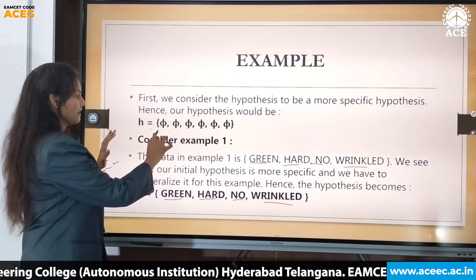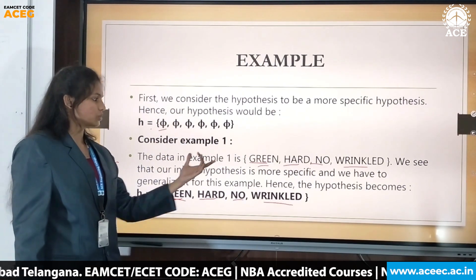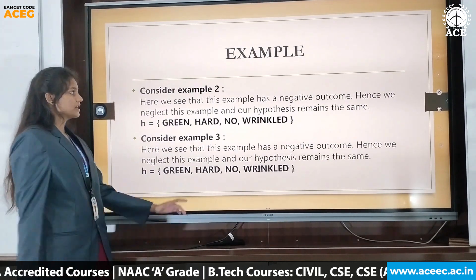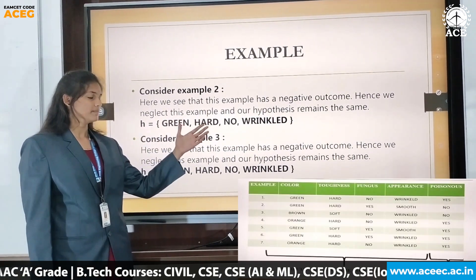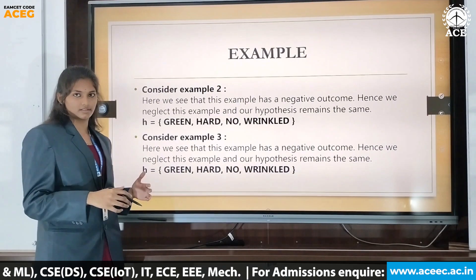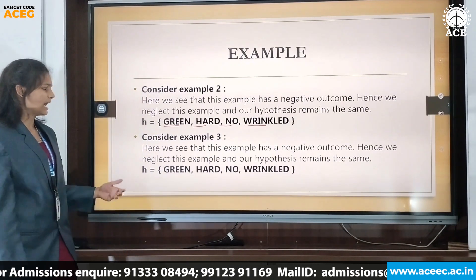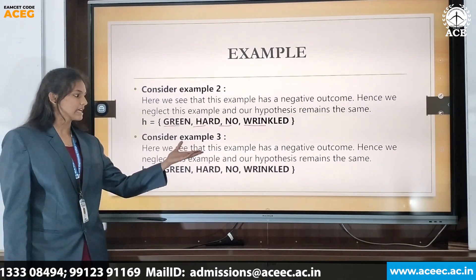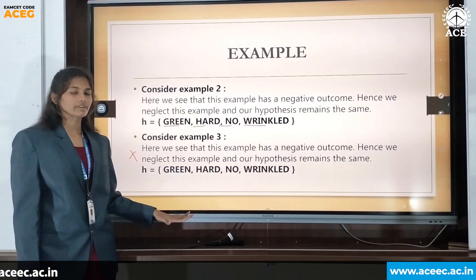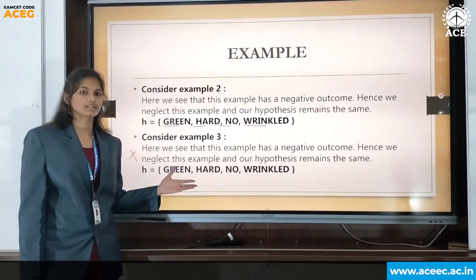The null values are updated to green, hard, no, and wrinkled from example one. For example two, the outcome is negative, so we do not update the hypothesis — it remains {green, hard, no, wrinkled}. Example three also has a negative outcome, so the hypothesis again remains unchanged. Since both examples two and three have negative outcomes, we skip them and the hypothesis stays the same.